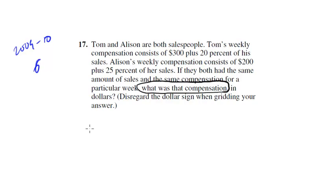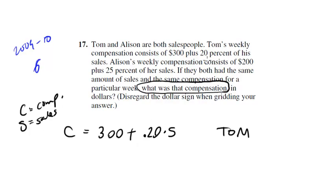Tom's weekly compensation consists of $300. So his compensation, which we'll call C, is $300 plus 20% of his sales. So for the sales, we'll just call that S. So his compensation is $300 plus 0.20 times S. Notice we're changing that percent into a decimal just to make it fit in the equation. That is for Tom. Allison's weekly compensation consists of $200 plus 25% of her sales. So C is, for her, is $200 plus 0.25 of S. If they both have the same amount of sales, so this is why I actually made S the same, because they have the same amount of sales, so we can just consider S is the same for both of them. And same thing with C. They had the same compensation for a particular week. What was the compensation?